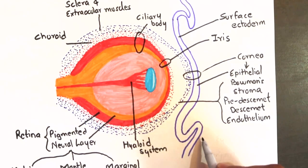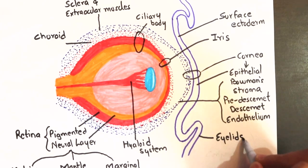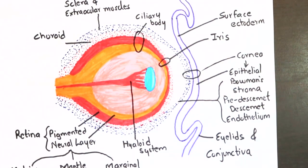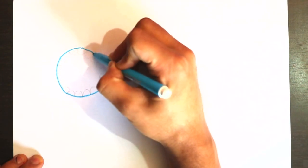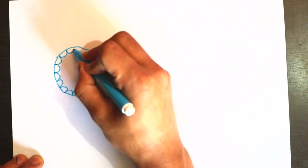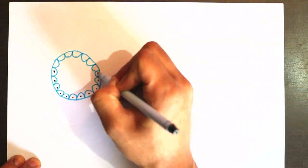Eyelids and conjunctiva develop from the surface ectoderm. Now let's talk about the formation of the lens. The lens is developed from the lens vesicle, and we know how the lens vesicle is formed.